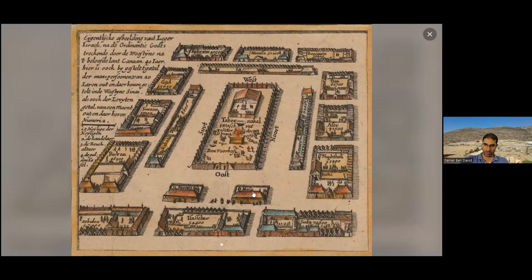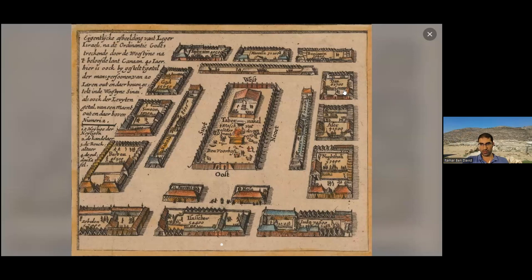In the close part to the entrance of the Mishkan, we have the tent of Moses and Aaron the priest. This is how the camp of Israel is organized when they are resting during these 40 years in the desert. When they start walking, Judah — you can see him here on the right corner — Judah is leading. At the end of this camp, we have the tribe of Dan. Dan and Judah: the head and the last of the tribes.